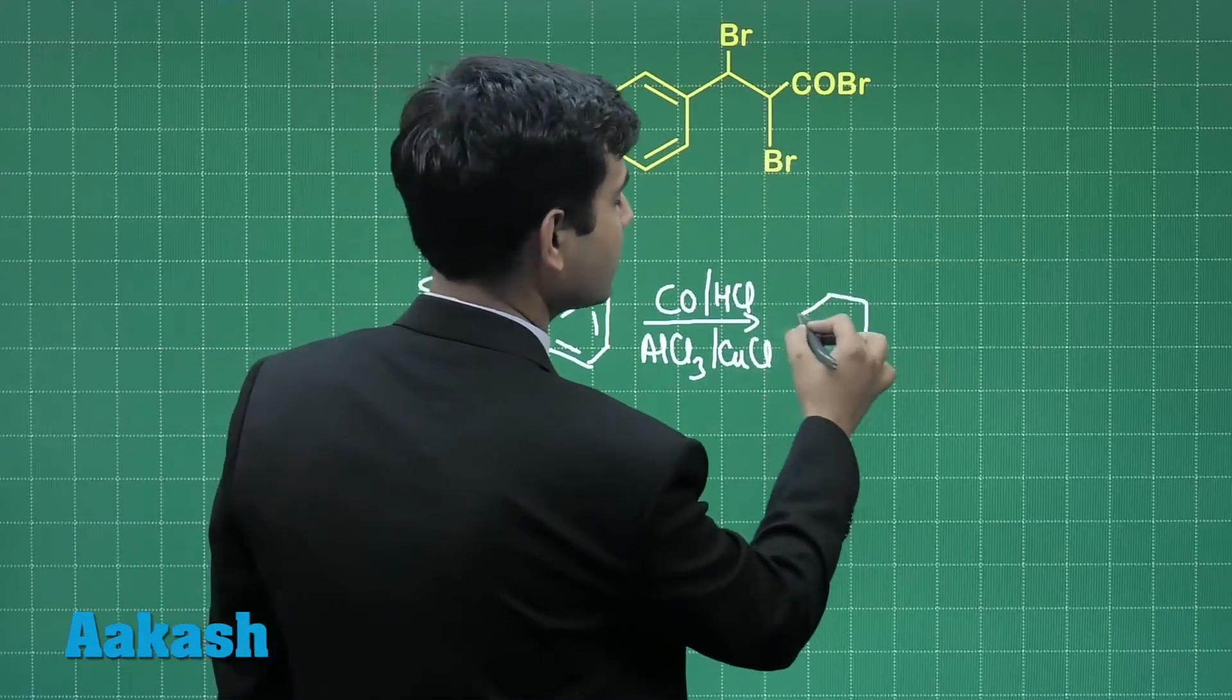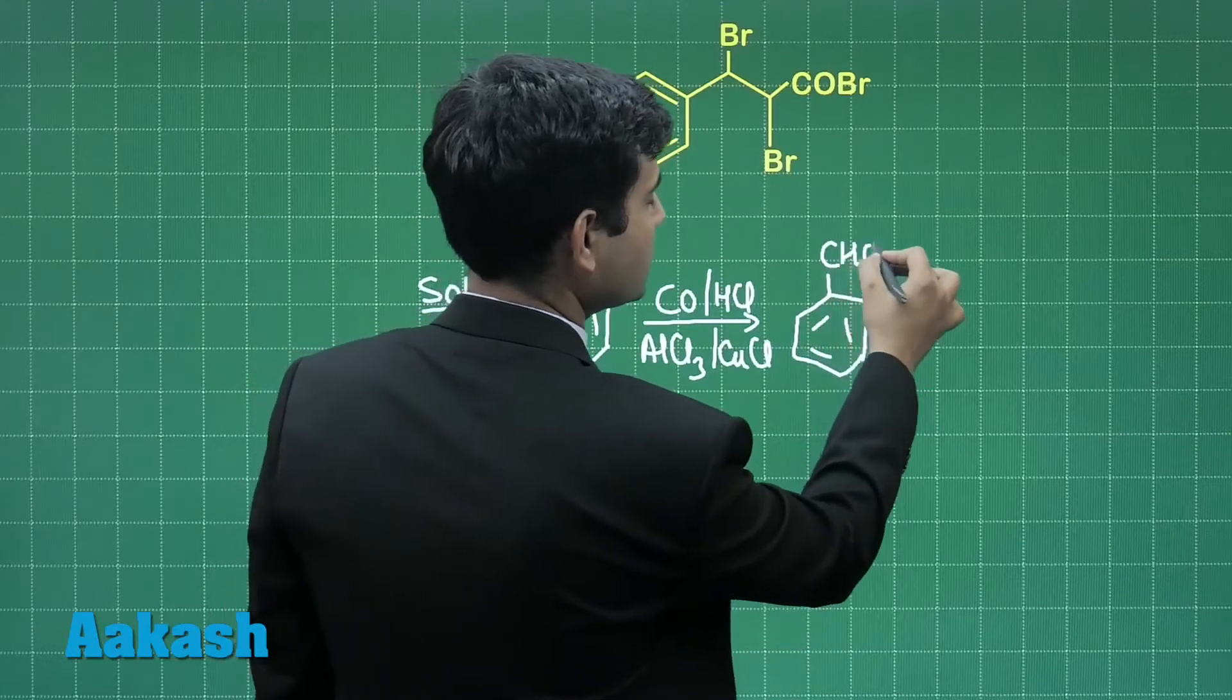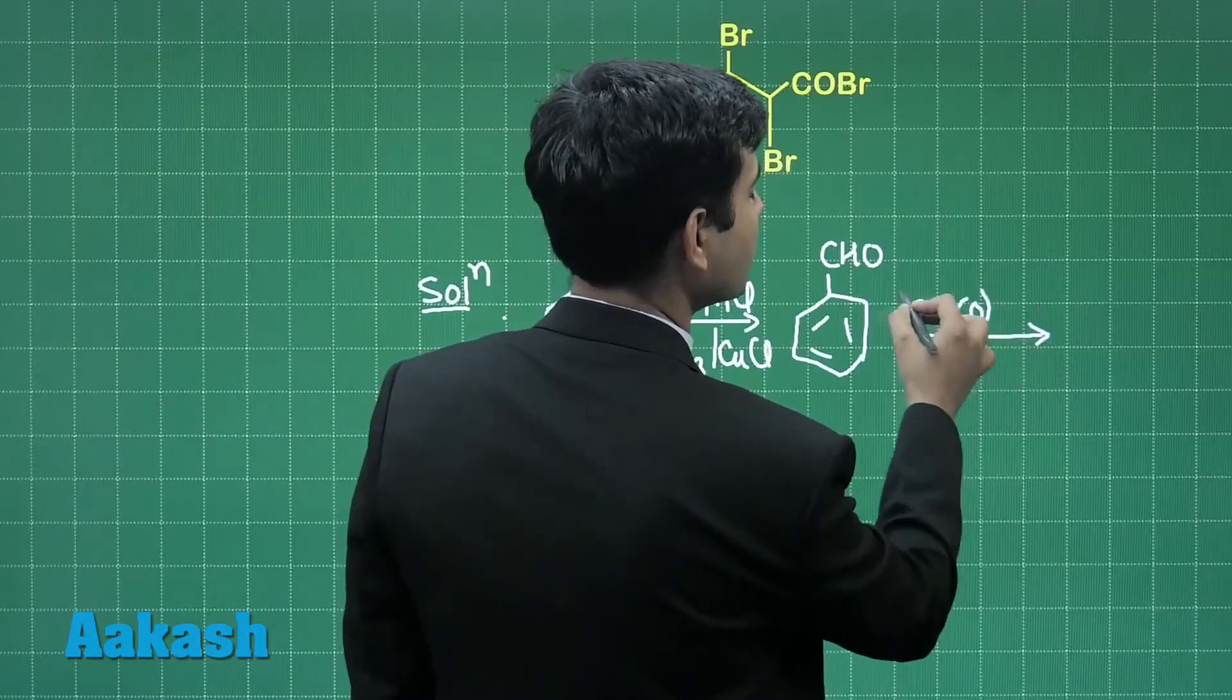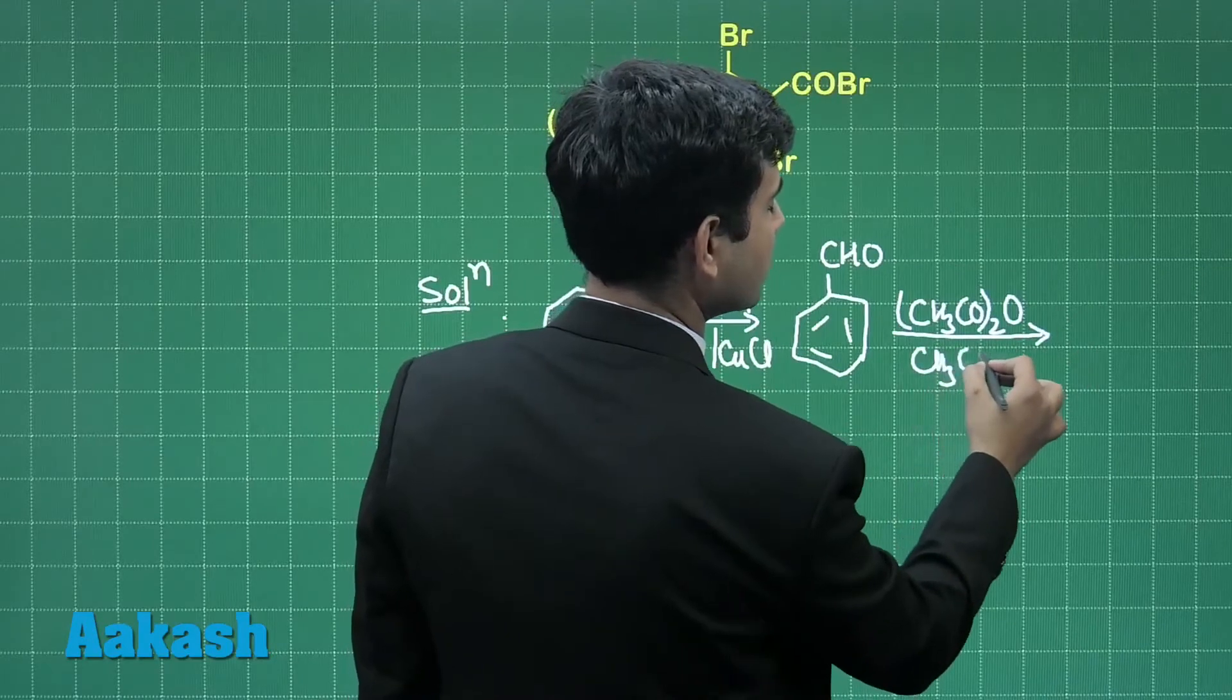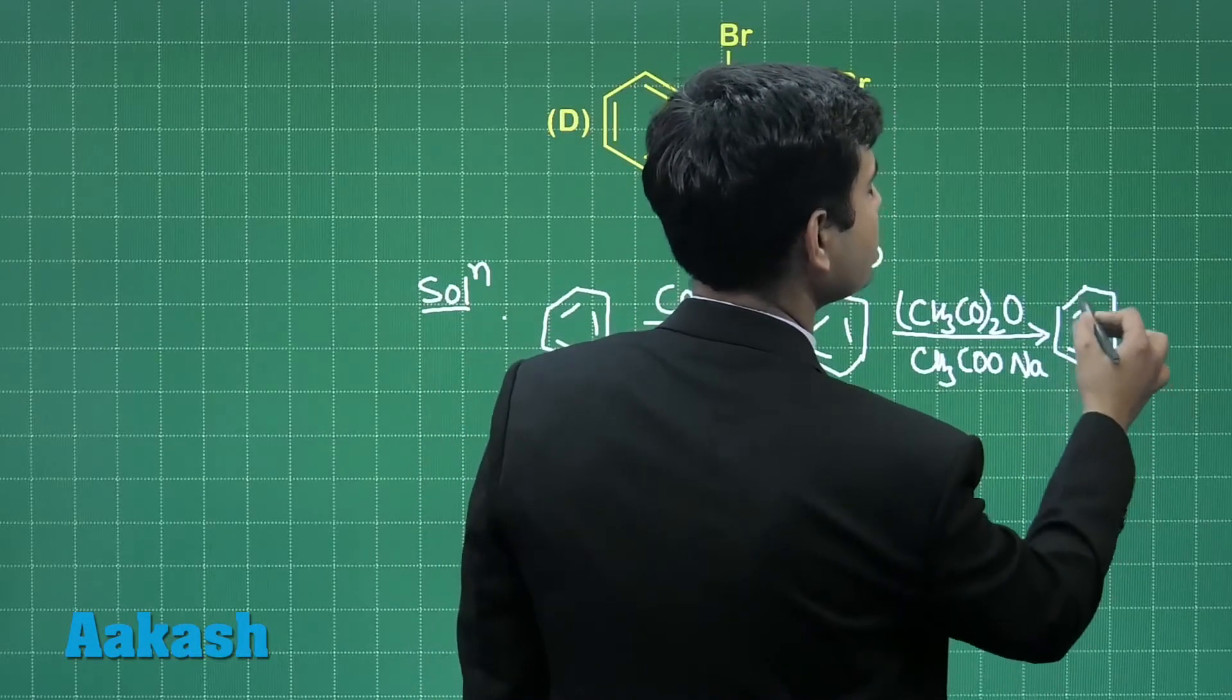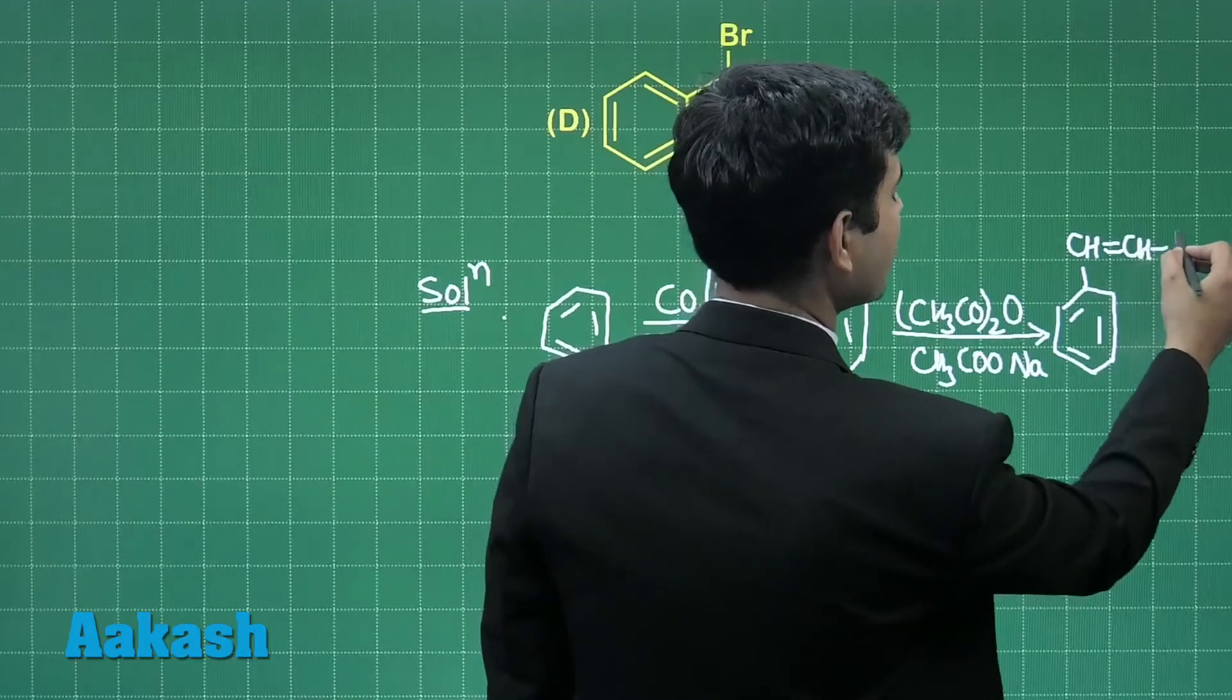This will give us benzaldehyde. Benzaldehyde when reacts with acetic anhydride with sodium acetate gives us cinnamic acid—Perkin reaction taking place.